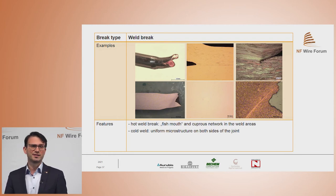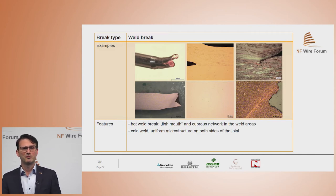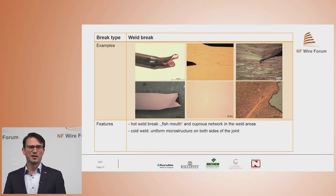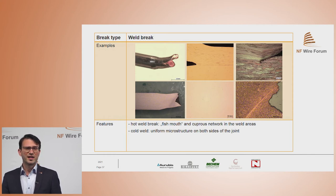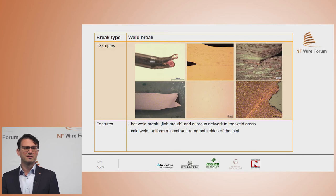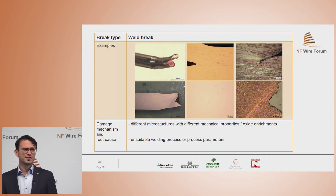Regarding weld breaks, we must distinguish between two different types: the hot weld break and the cold weld break. In the hot weld break, you see the so-called fish mouth, a very typical feature. Looking at the microstructure, you also notice a cuprous network in the weld area, which is not the case for the cold weld break. In the cold weld break, you see a uniform microstructure on both sides of the joint, but the join line is visible at around 45 degrees to the drawing direction. The damage mechanism and root causes are different microstructures with different mechanical properties, oxide enrichment, and ultimately an unsuitable welding process or unsuitable process parameters.